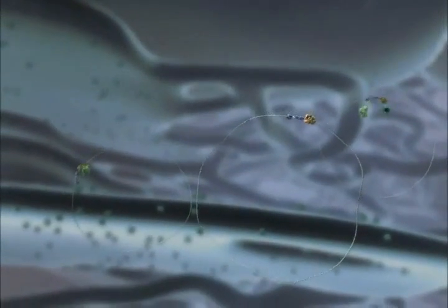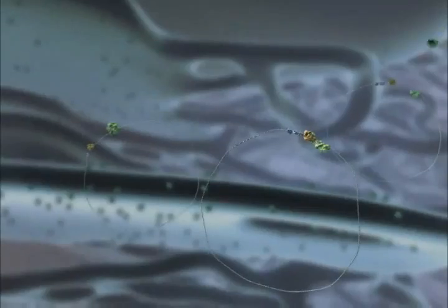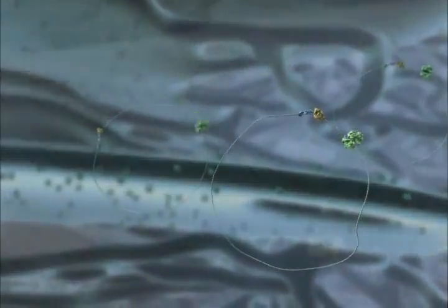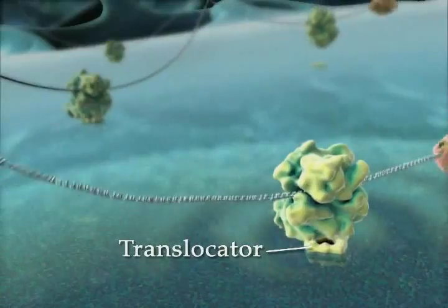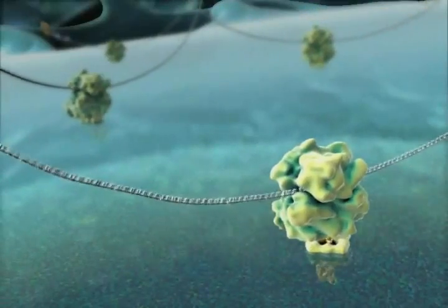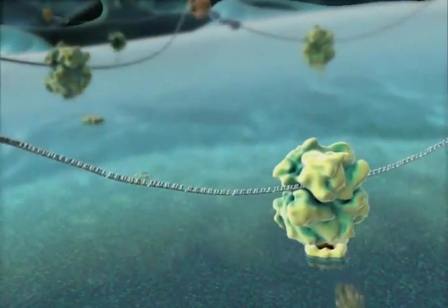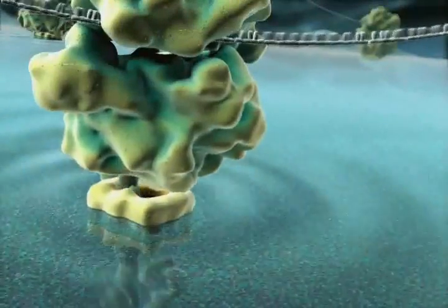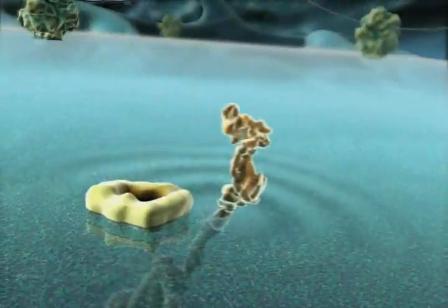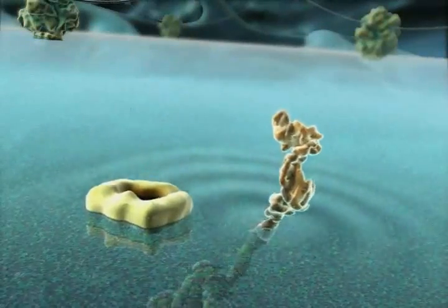The synthesis of cell-secreted and integral membrane proteins is initiated by free ribosomes, which then dock to protein translocators at the surface of the endoplasmic reticulum. Nascent proteins pass through an aqueous pore in the translocator. Cell-secreted proteins accumulate in the lumen of the endoplasmic reticulum, while integral membrane proteins become embedded in the endoplasmic reticulum membrane.